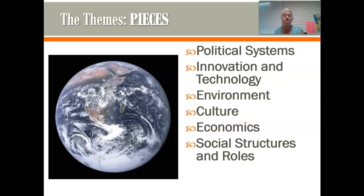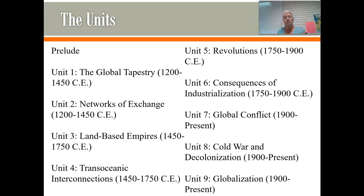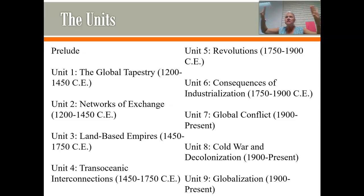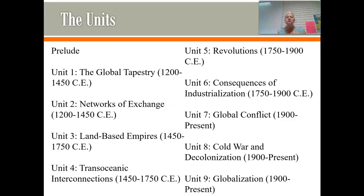The course itself is divided into nine units. We start with a prelude unit that is about four weeks long, where we'll set the foundation for the rest of the course. In units one and two we'll be looking at the global tapestry — what's going on in different parts of the world, like a piece of art — and then how all of these places interact and exchange.